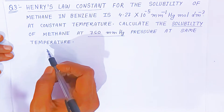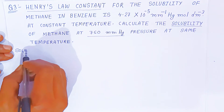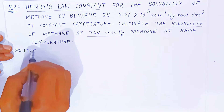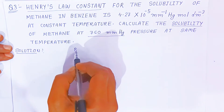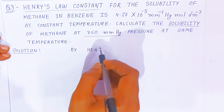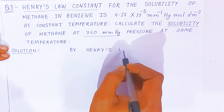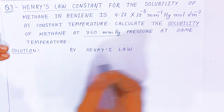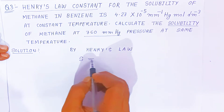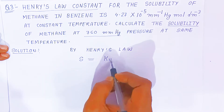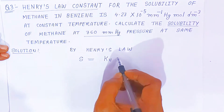So what happens by Henry's Law? This is also a two-marks question. According to Henry's Law, solubility is always equal to Henry's constant KH for the methane gas multiplied by pressure.